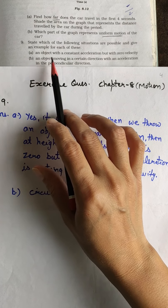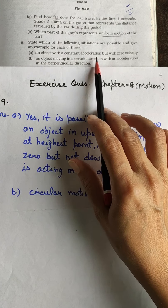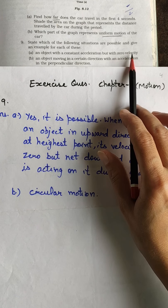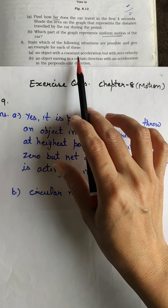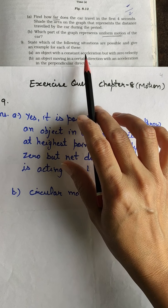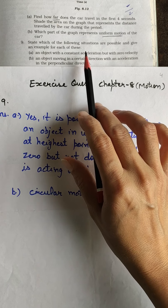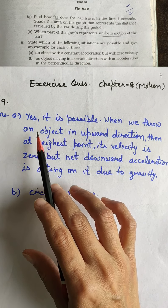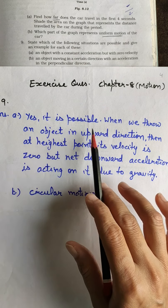First part is an object with a constant acceleration but with zero velocity. Can an object move with constant acceleration but velocity is zero? In every case it is not possible but there is a case we will write yes it is possible.